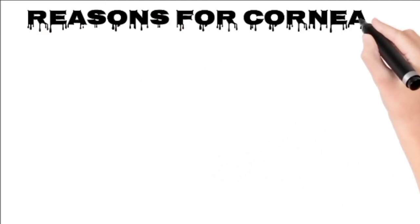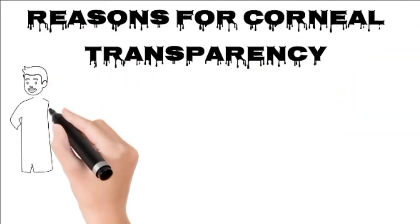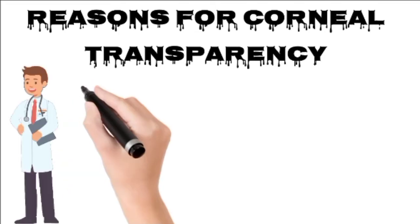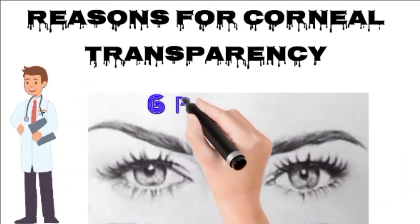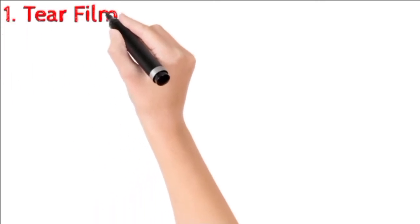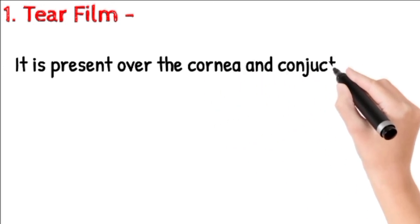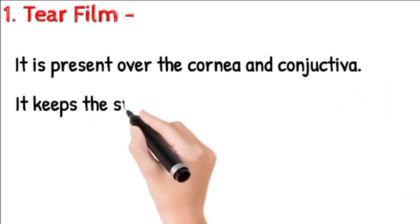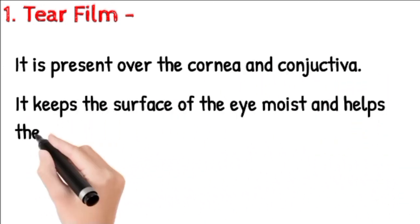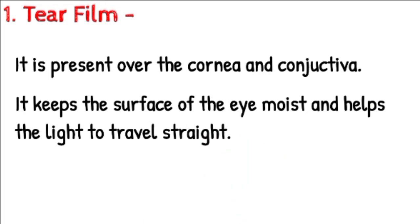Hello friends, welcome to Tricky Medicos. In this video we will talk about the reasons for corneal transparency. First, we will talk about the tear film. It is present over the cornea and the conjunctiva. It keeps the surface of the eye moist and helps the light to travel straight, thus helping in maintaining transparency.